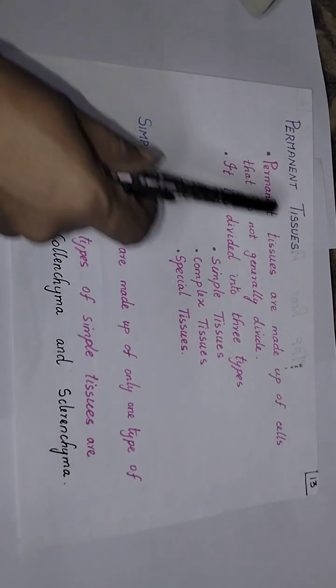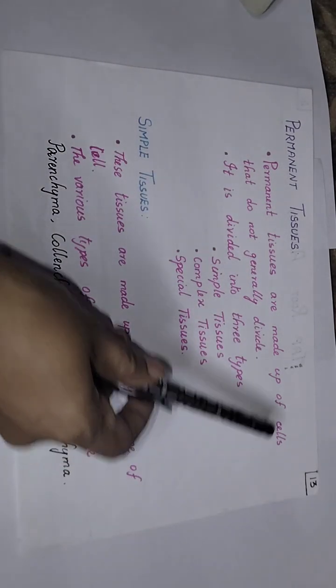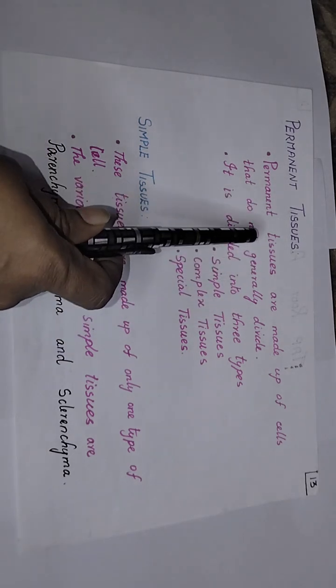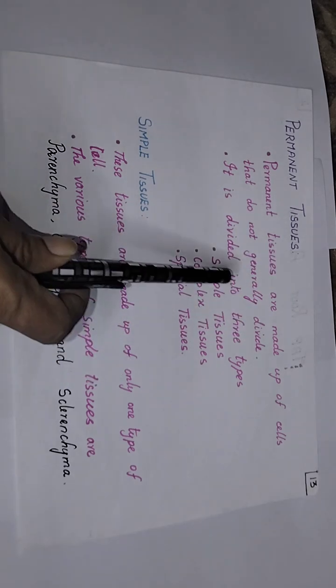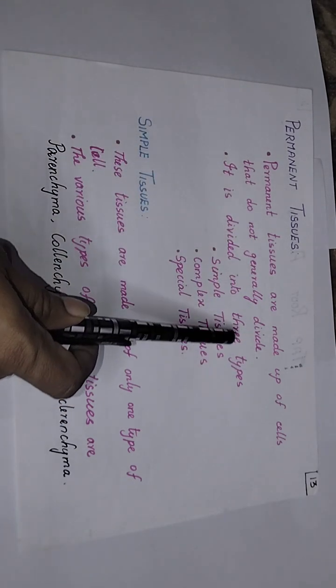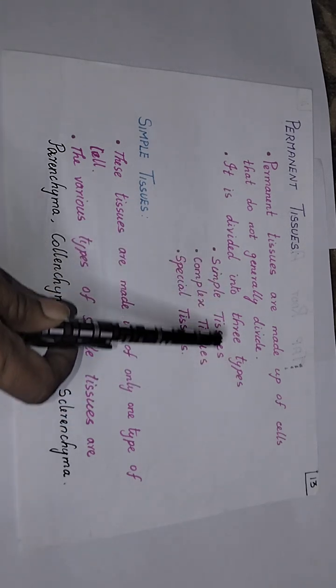Here we are going to discuss permanent tissues. Permanent tissues are made up of cells that do not generally divide — note it is said they do not generally divide, not that they will never divide. They are divided into three major types: simple tissues, complex tissues, and special tissues.